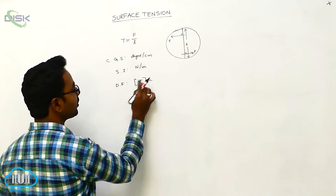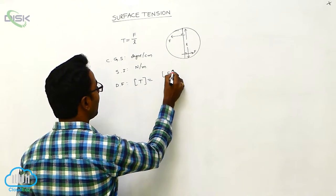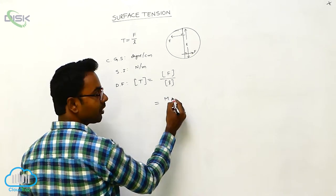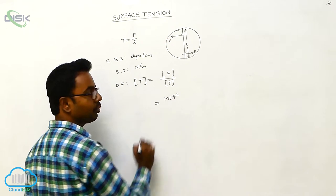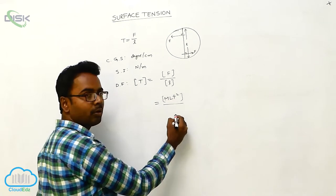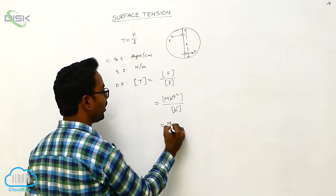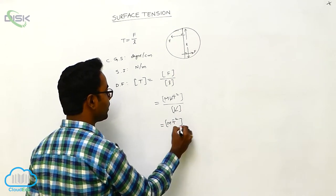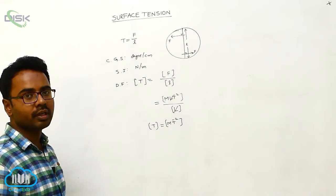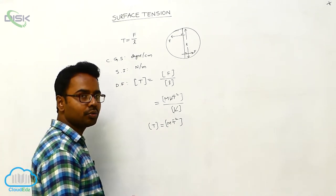The dimensional formula of surface tension T equals the dimensional formula of force divided by the dimensional formula of length. The dimensional formula of force is M L T minus 2, and the dimensional formula of length is L. After cancellation, the dimensional formula of surface tension is M T minus 2.